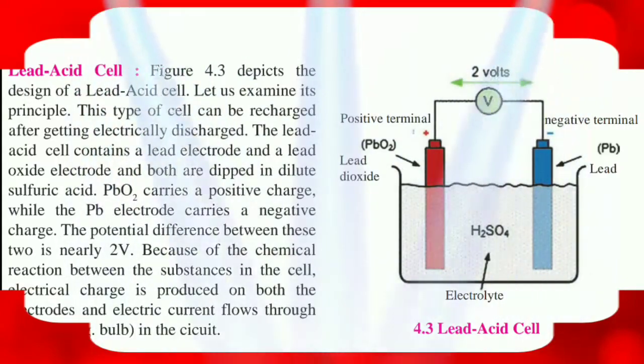Because of the chemical reactions between the substances in the cell, electric charge is produced on both the electrodes and electric current flows through the load in the circuit. This kind of electric cells have a capacity to deliver large current. Hence lead-acid cells are used in cars, trucks, motorcycles and uninterrupted power supplies. That is in the UPS. Students you have to draw the diagram and you have to color it also.